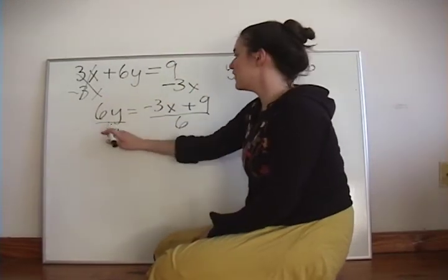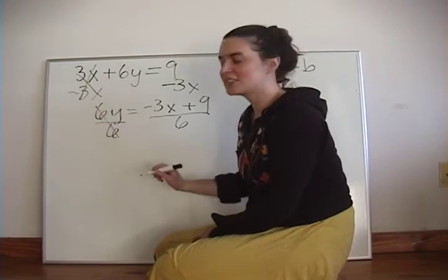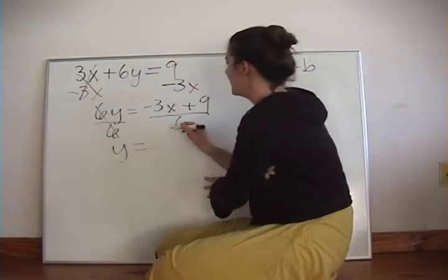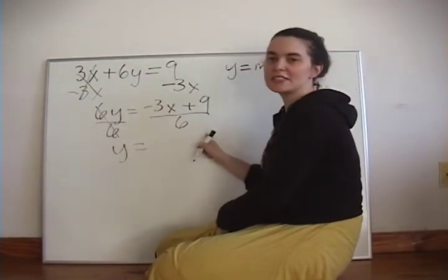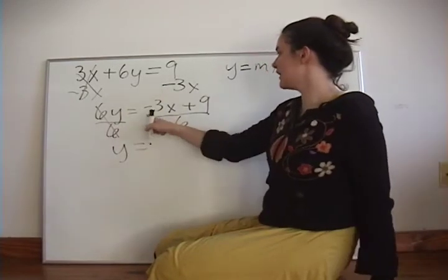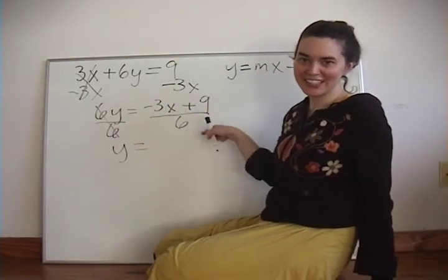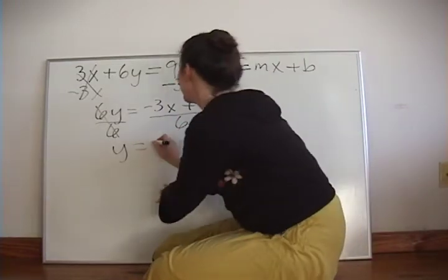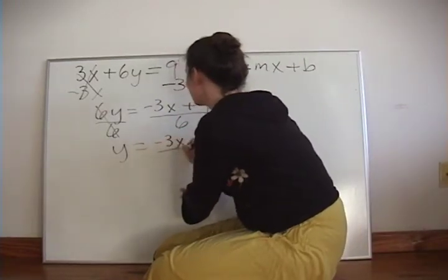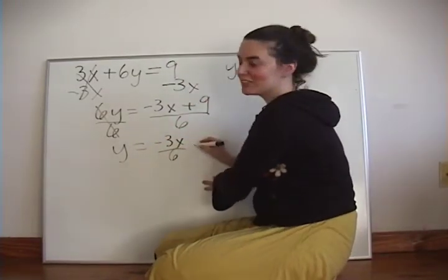6 divided by 6 cancels out, we just get y on the left, and then we can split this up into two fractions because negative 3x plus 9 over 6 is the same as negative 3x over 6 plus 9 over 6.